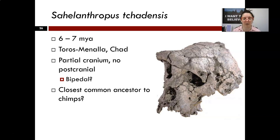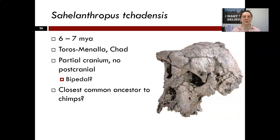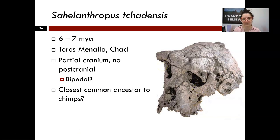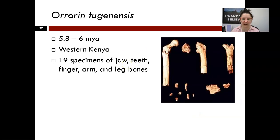Sahelanthropus tchadensis is potentially one of the earliest candidates for the earliest hominin because some indicators of bipedalism are present. We don't have any post-cranial remains, so these are cranial traits we're looking at — particularly the position of the foramen magnum, which indicates a shift towards more upright posture, more indicative of bipedalism versus being located towards the back of the skull, which suggests quadrupedalism. It's been suggested this might be our last common ancestor with chimpanzees, supported by genetic evidence placing that split between nine to five million years ago.